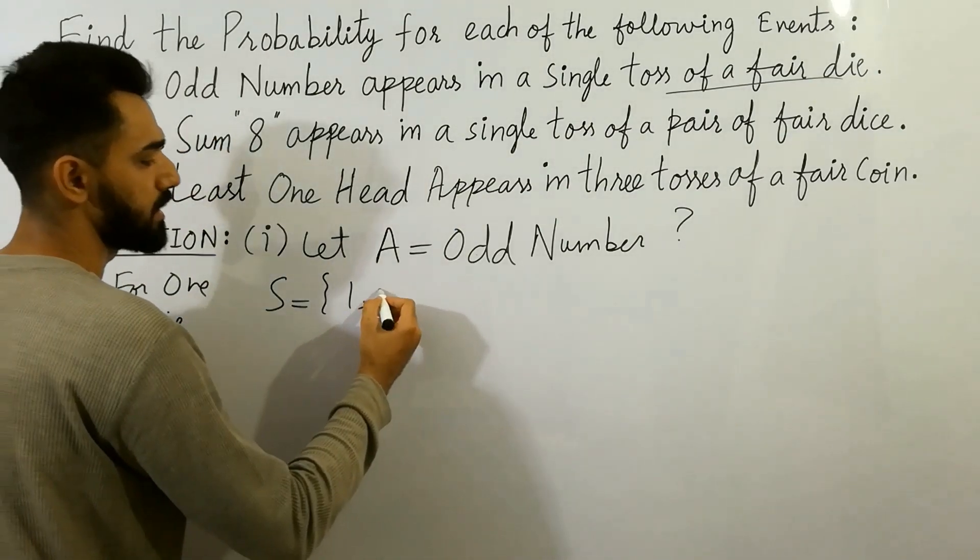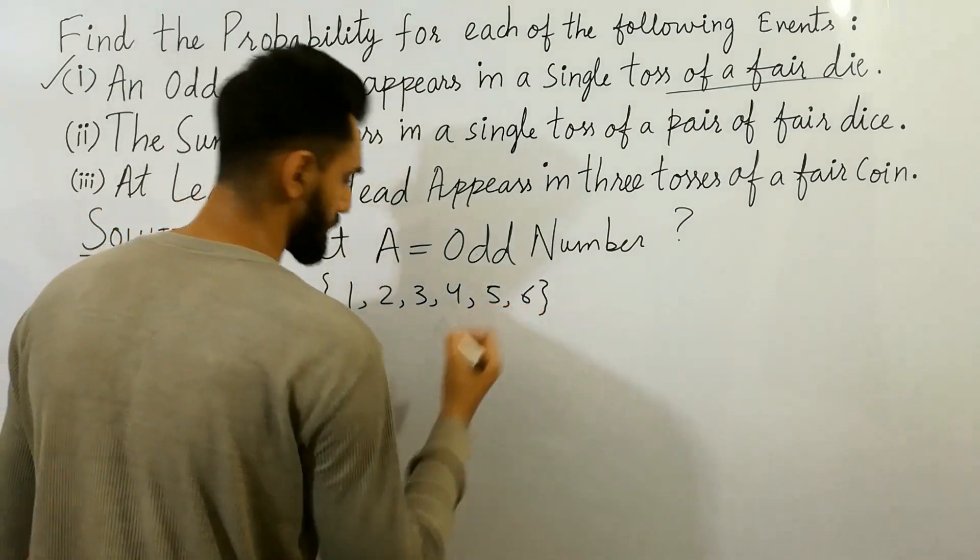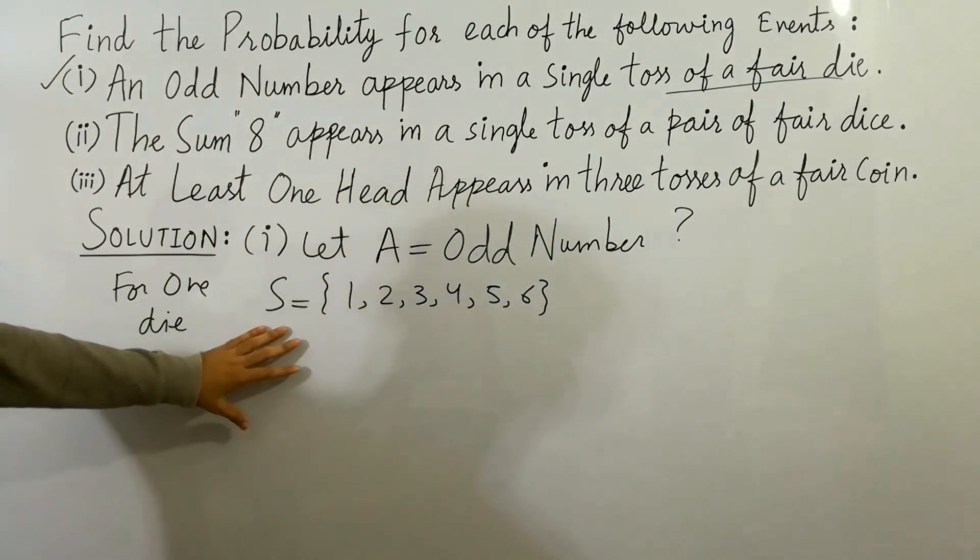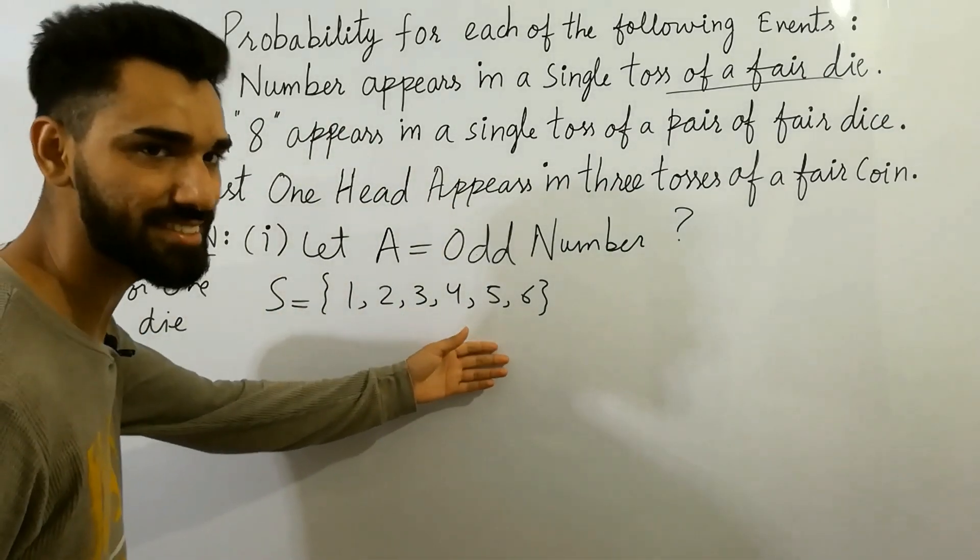One, two, three, four, five, six. And what is that? This is the sample space of one die. This has six sides.